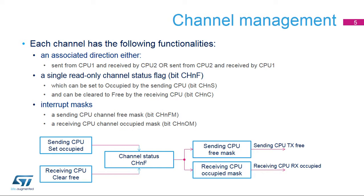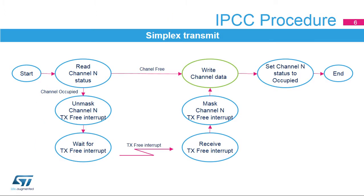The receiving CPU can signal a channel to be free by setting the channel status to free using its Clear Channel N Register Bit, or CHNC. If the sending CPU has unmasked its channel-free interrupt in its Channel N Free Mask Register Bit, or CHN-FM, a TX-free interrupt, or flow-on, is generated for the sending CPU.